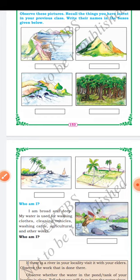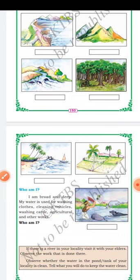A river is a natural flowing water body — usually fresh water flowing towards an ocean, sea, lake, or another river. River is a fresh water resource and provides water to drink. If there is a river in your locality, visit it with your elders and observe the work done there. Also observe whether the water, pond, or tank of your locality is clean. Keep the water clean.